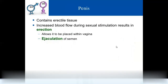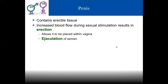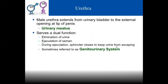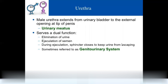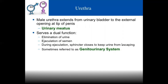The penis is made of erectile tissue. During sexual stimulation, blood flow increases causing erection, followed by ejaculation of semen. The male urethra extends from the urinary bladder to the external tip of the penis. This opening has a dual function: eliminating urine and ejaculating semen. During semen ejaculation, the urinary sphincter closes so urine doesn't come out.